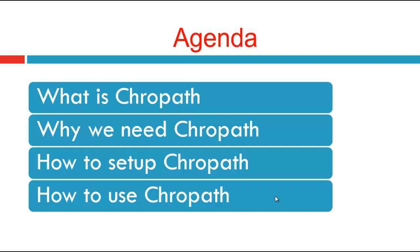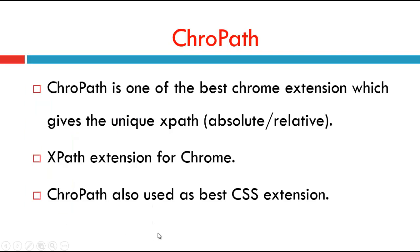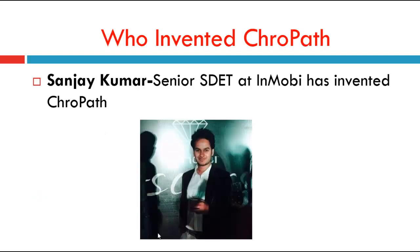Now let's see one by one in detail. Crowpath is one of the best Chrome extensions which gives the unique XPath — both absolute and relative XPath. Crowpath will work only for the Chrome browser. Crowpath is also used as a best CSS extension. Sanjay Kumar, the senior SDAT at IMOB, invented Crowpath.